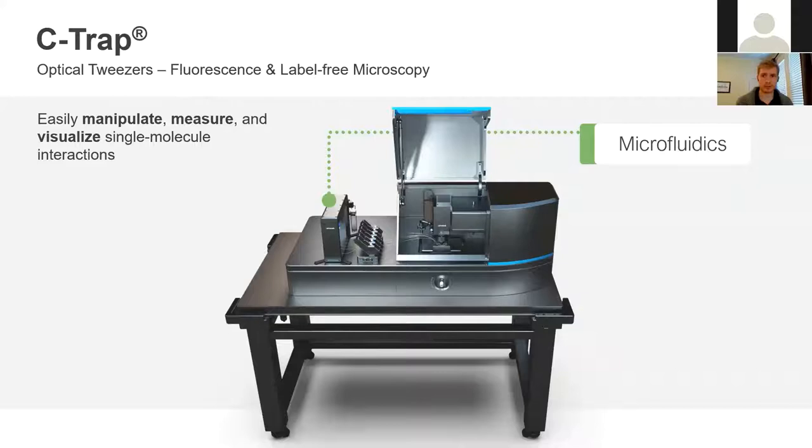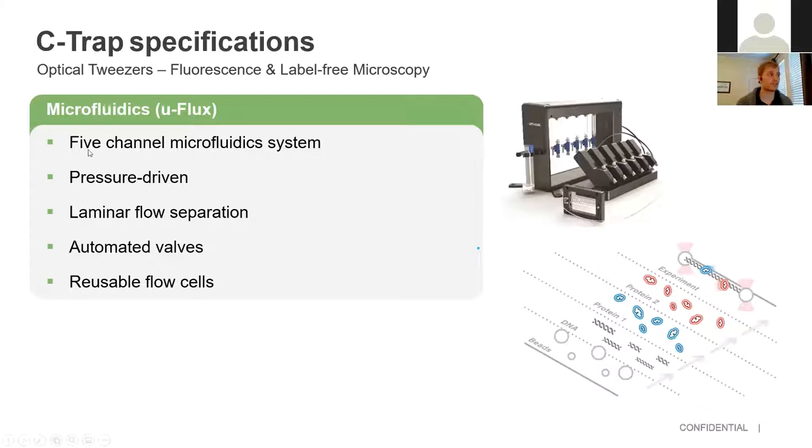The next component is the microfluidics, which we call the U-Flux. So this is a five channel system. It is driven by a pressure box. And there's no physical separation between the five channels once they enter the flow cell. They don't mix, though, because you have laminar flow separation, which I'll demonstrate on the next slide. And you can control the valves automatically through the software to decide what reagents you're going to flow in to test whatever hypothesis you have. And these flow cells are made out of glass and they can be used for months, for years, if treated properly.